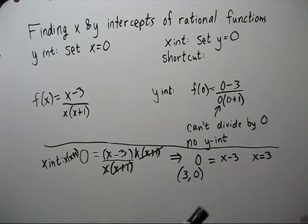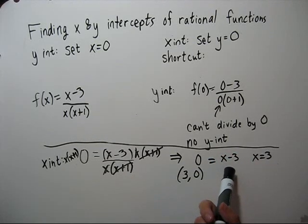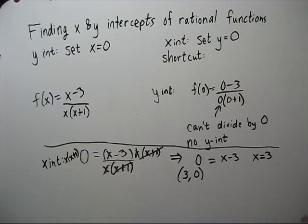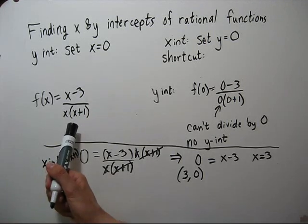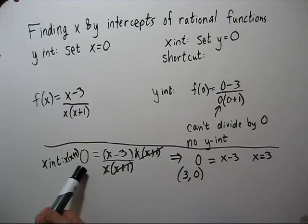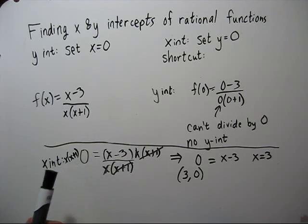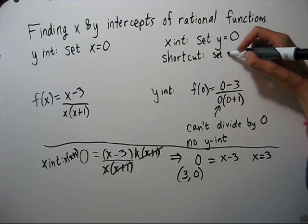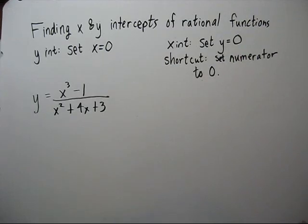Now notice that this equation we got in our second step is the same as if we set our numerator to zero. That will work every time because we'll need to get rid of the denominator by multiplying it by both sides. But when we multiply the left side, we have a zero there and it will go away. So the shortcut is set the numerator to zero. Let's do another example.